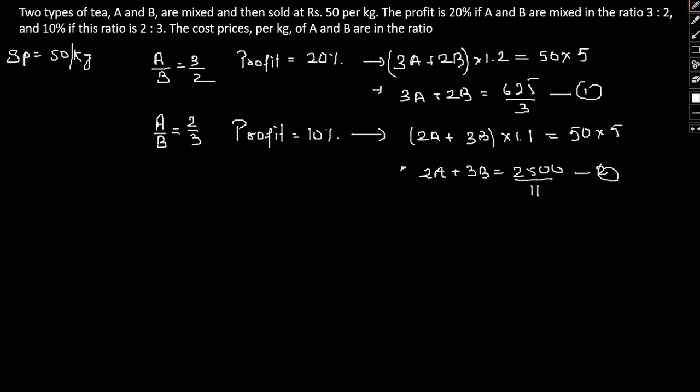Now if we try and solve equations 1 and 2, let me simplify them. Equation 1 becomes 9A plus 6B equals 625, and equation 2 becomes 22A plus 33B equals 2500. If we solve these two equations, we get A equal to 375 by 11 and B equal to 1750 by 33.